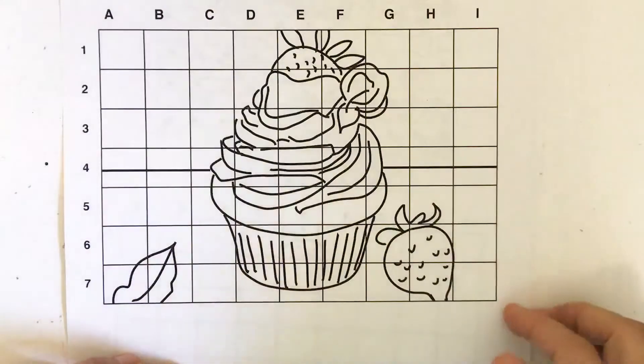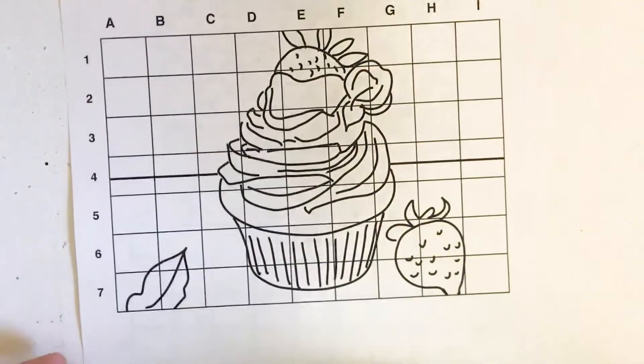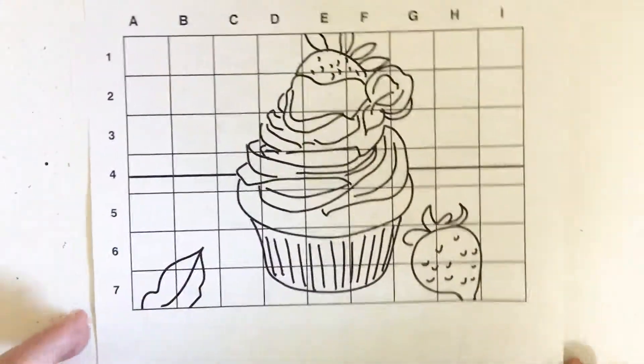I want to go over this next product on my TPT store. This is a mystery grid drawing sheet. You're getting two pages in the PDF that you download.